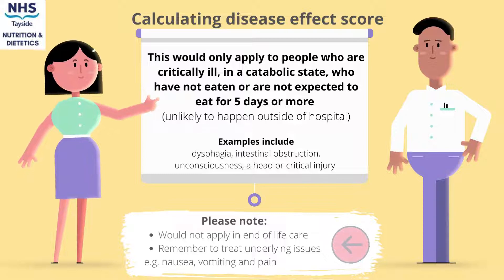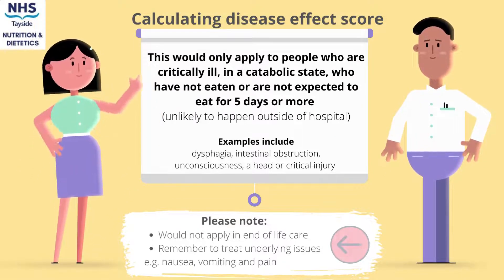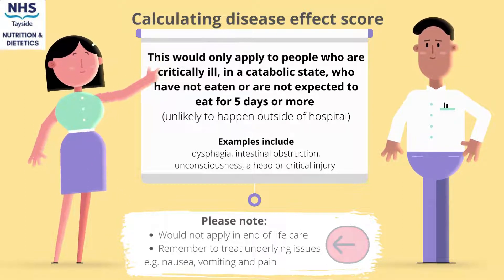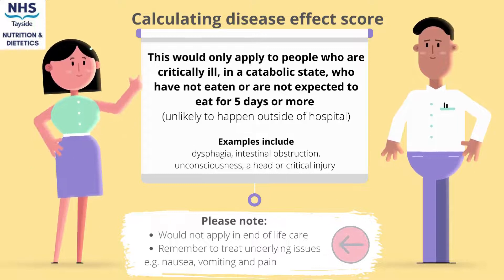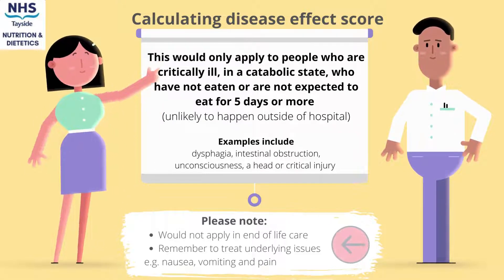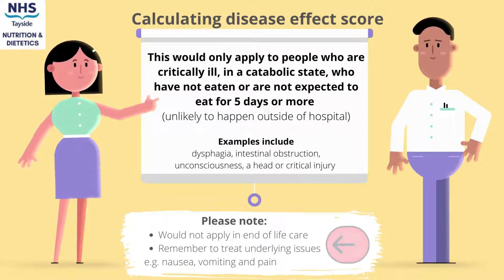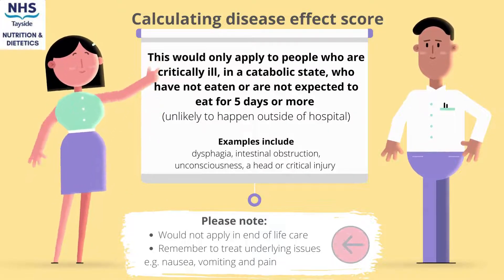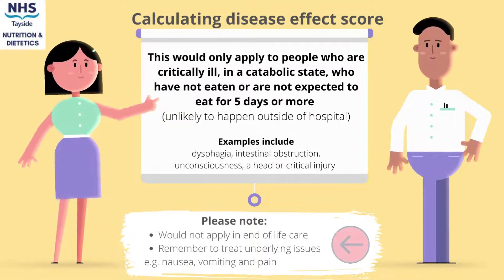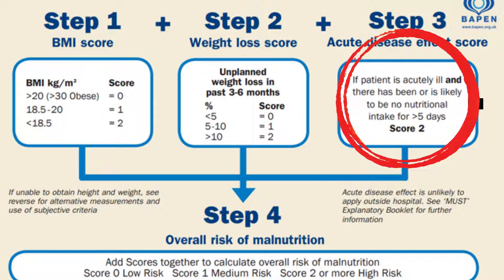The third step involves determining an acute disease effects score. This step only applies to those who are critically ill in a catabolic state who have not eaten or are not expected to eat for over five days — this is unlikely to happen outside of a hospital. It could apply to someone with dysphagia, an intestinal obstruction, unconsciousness, or a head or critical injury. It is important to note that MUST is not appropriate if someone is approaching end-of-life care. If a patient is acutely ill and there has been or is likely to be no nutritional intake for greater than five days, this step is scored 2; otherwise it is scored 0.